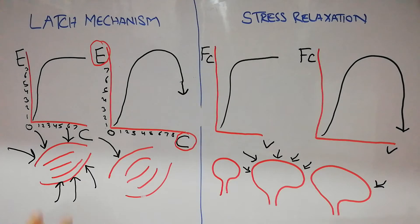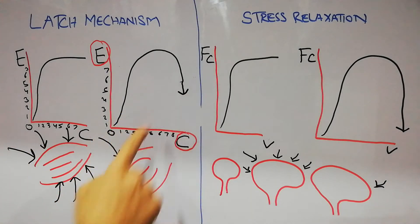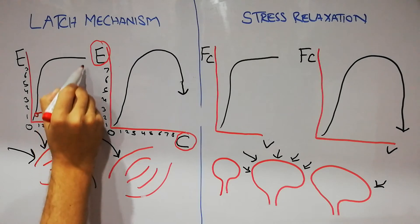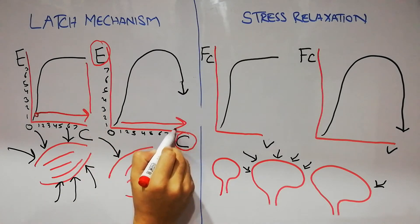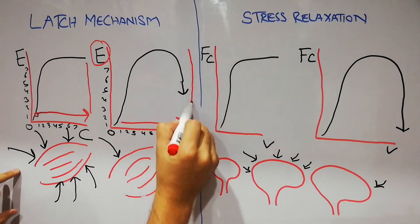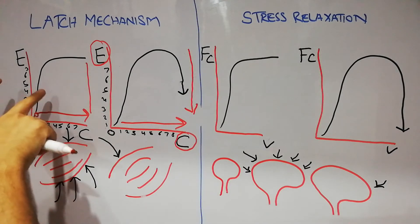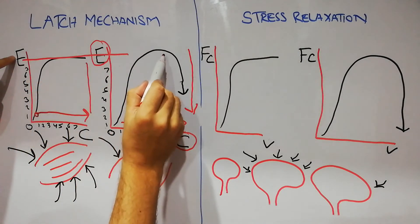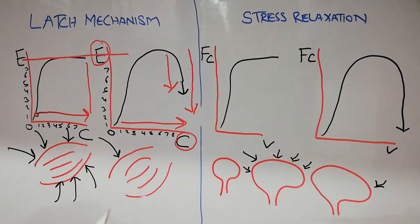After some time, once contraction has occurred, the contraction remains at this level. Initially the contraction reached a certain level and stays there, but the amount of energy consumption and the amount of excitation needed has tremendously decreased over time. Initially the consumption of energy and excitation was at a high level, suppose level 10, but after some time that excitation and nervous stimulation needed for contraction has decreased, while the contraction remains the same.